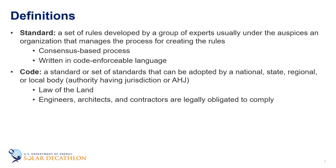Now, what is a code? A code is a set of rules that can include one or more standards. It is written such that it is enforceable as a law by a national, state, regional, or local entity. This entity is called an authority having jurisdiction, or AHJ. Once a code is adopted by the AHJ, it becomes the law of the land and everyone including engineers, architects, and contractors are legally obligated to comply with it.